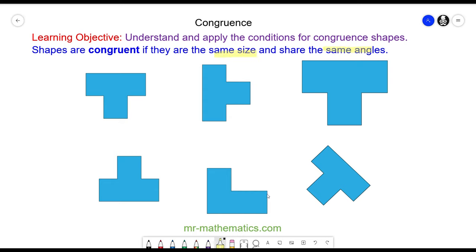So here we have six shapes. Four of them are congruent, two of them are not. Do you want to take a few moments by pausing the video and have a look at which four shapes you think are congruent?